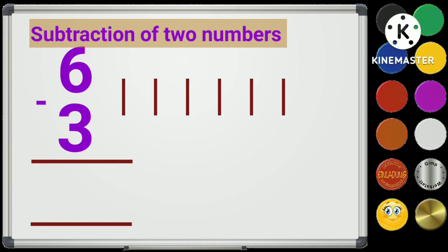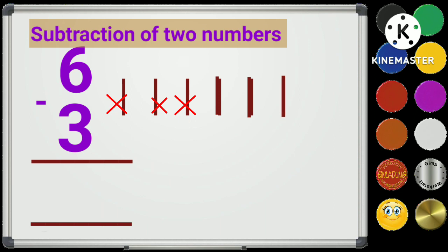The second number is 3, so we will subtract 3 lines out of these. Now we will count the remaining lines: 1, 2, 3. 3 lines are left. 6 minus 3 is equal to 3.